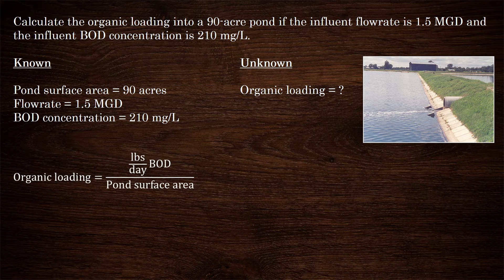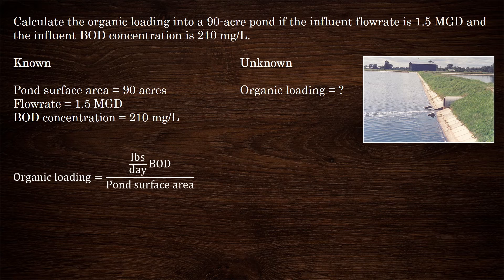The formula is: pounds per day of BOD divided by pond surface area. Do we have pounds per day of BOD and the pond surface area? We have a BOD concentration in mg per liter, but we don't have the BOD in pounds per day, so we'll need to solve for that. For the pond surface area, they gave us 90 acres.